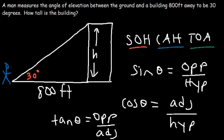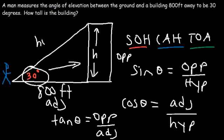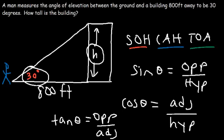We have three trigonometric functions applicable to this situation: sine, cosine, and tangent. Which one is most suitable? The angle is 30 degrees. Opposite to the angle is the height of the building, which we're looking for. Adjacent to the angle is 800 feet, and the hypotenuse is across the 90-degree angle. Since we have the opposite and adjacent sides, we must use the tangent ratio — we can't use sine or cosine because we don't know the hypotenuse.